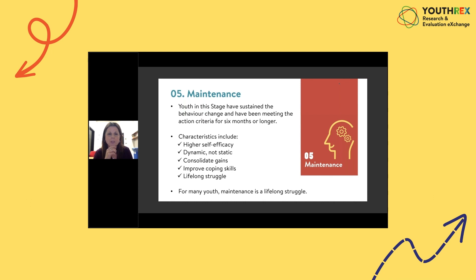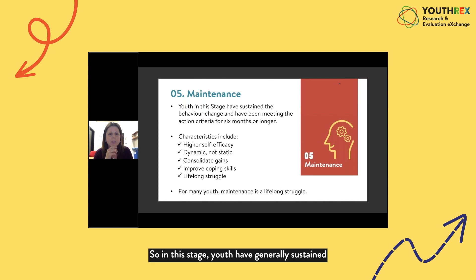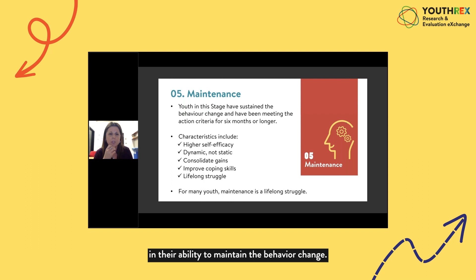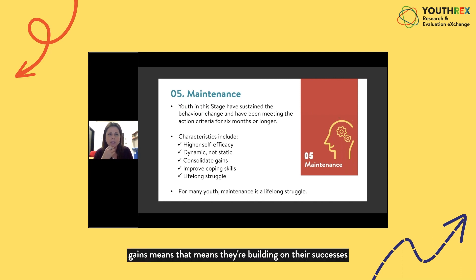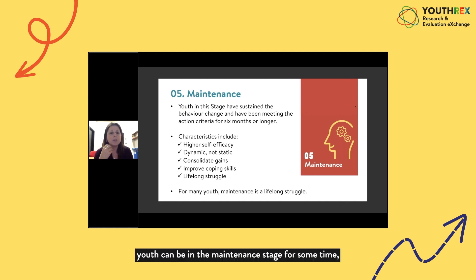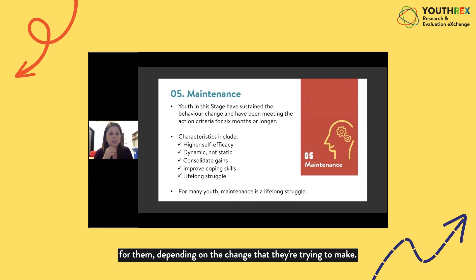In the maintenance stage, youth have generally sustained the behaviour change and have been meeting their action criteria for six months or longer. You'll see youth with high self-efficacy — a lot of confidence in their ability to maintain the behaviour change. They're doing well, consolidating gains, and building on their successes to achieve even more. Coping skills have typically improved significantly and they're using more positive coping skills. However, youth can be in the maintenance stage for some time — in fact, it can be a lifelong struggle depending on the change, and they may stay in this stage for the rest of their life.